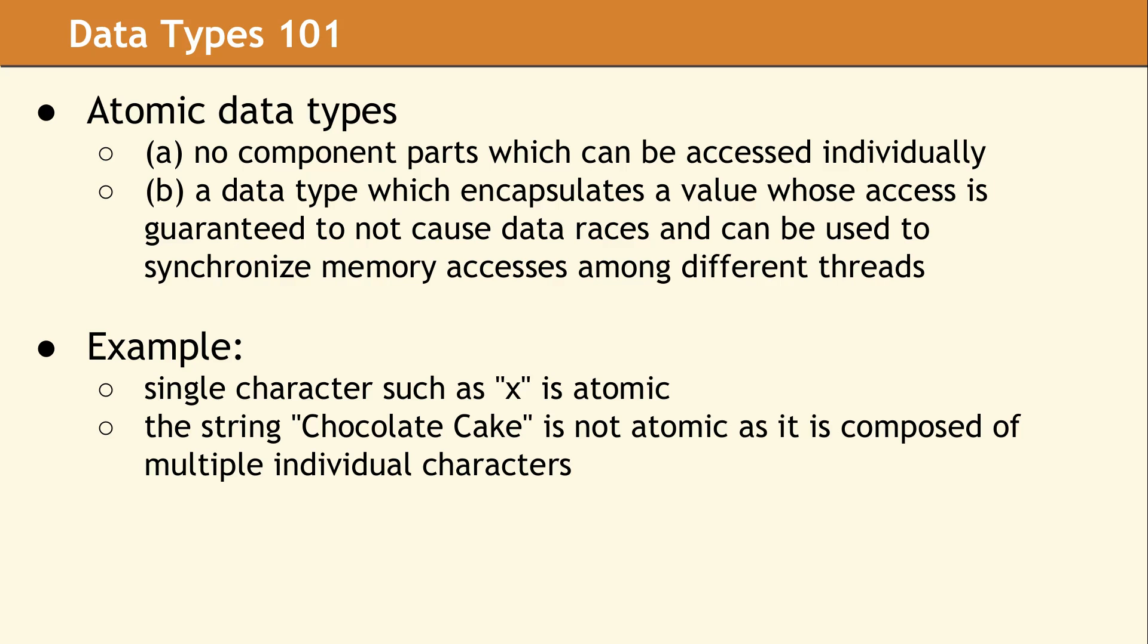Under the atomic data type category, there are two subcategories. The first one refers to components which can be accessed individually. For instance, the single character X is considered an atomic data type. If you're looking at the string chocolate cake, this is not atomic, since it can be decomposed into individual characters. The other category of atomic data types are those with a specific meaning in multi-threaded programs, and they're data types which are guaranteed not to have data races when accessed simultaneously among different threads. These are somewhat related but different categories, and it's important to understand the difference. This makes atomic data type an overloaded term, and it can sometimes be confusing.